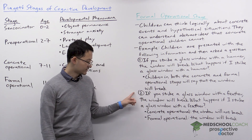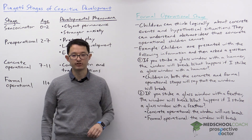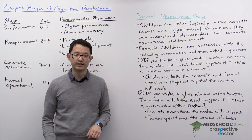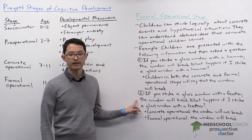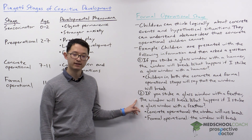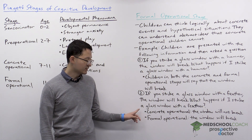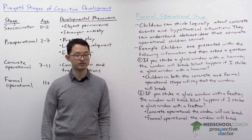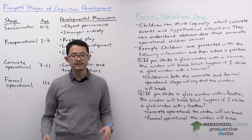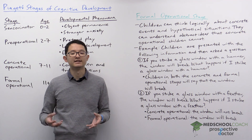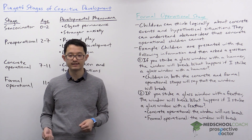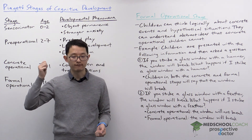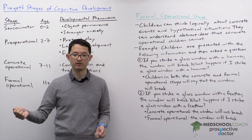However, when presented with the second situation — if you strike a glass window with a feather, the window will break — what happens if I strike a glass window with a feather? In this second situation, children in the concrete operational stage will say that the window does not break, because they can only reason using concrete events. To them, a feather is fluffy and light; there's no way a feather can break a glass window.